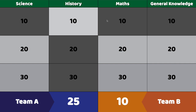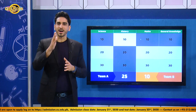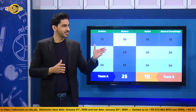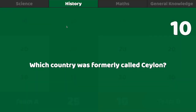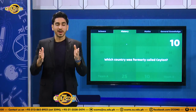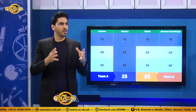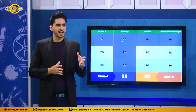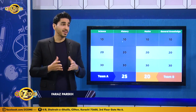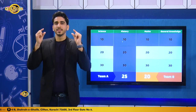Team A gets to choose the last question of the round and picks history for 10. The question: which country was formerly called Ceylon? Team B buzzes first and answers Sri Lanka. That is absolutely right! Team B has caught up well — they are only five points behind. Team B's strategy going into the next round: hoping to pick the right questions. Viewers, join us after a short break.